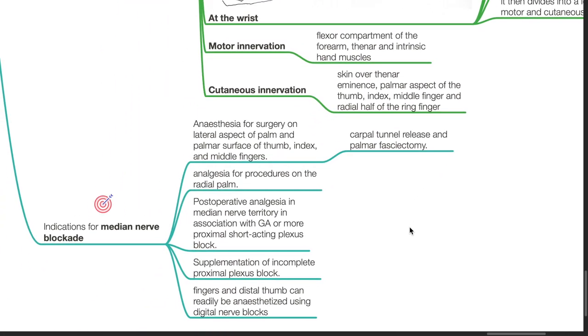Indications for median nerve block: anesthesia for surgery on the lateral aspect of the palm and palmar surface of the thumb, index and middle fingers, carpal tunnel release and palmar fasciectomy. Analgesia for procedures on the radial palm. Postoperative analgesia in median nerve territory in association with general anesthesia or more proximal short-acting plexus block. Supplementation of incomplete proximal plexus block. Fingers and distal thumb can readily be anesthetized using digital nerve blocks.